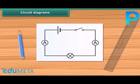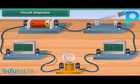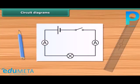A circuit diagram is a simplified representation of an electrical circuit. It is a drawing using standardized symbols of the arrangement that shows how electronic components are connected together.